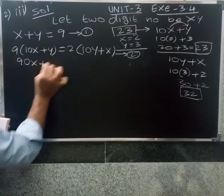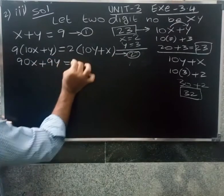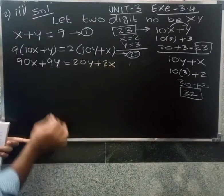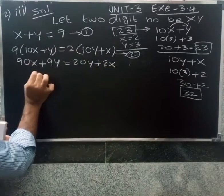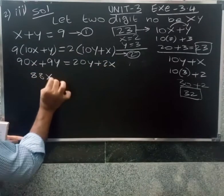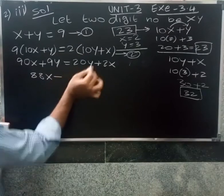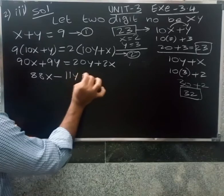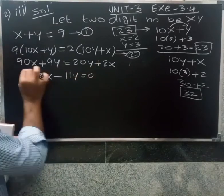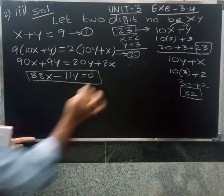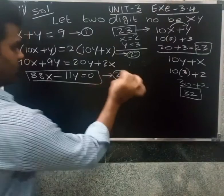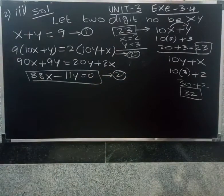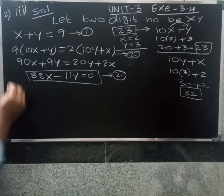Expanding: 90x plus 9y equals 20y plus 2x. Rearranging: 90x minus 2x plus 9y minus 20y equals 0, which gives 88x minus 11y equals 0. So our two equations are: first, x plus y equals 9; second, 88x minus 11y equals 0.